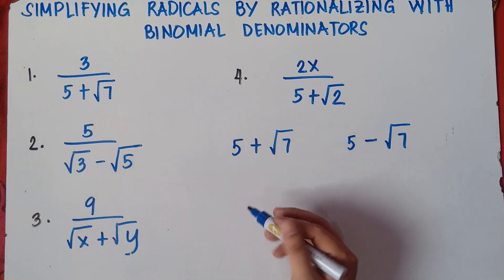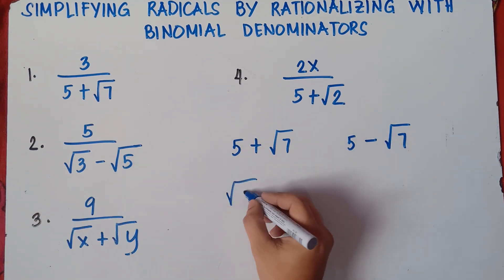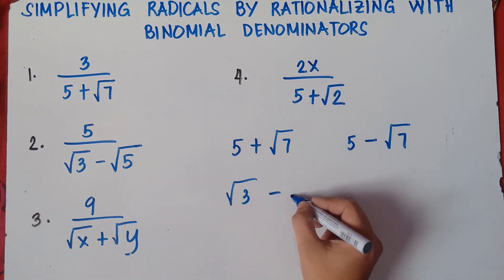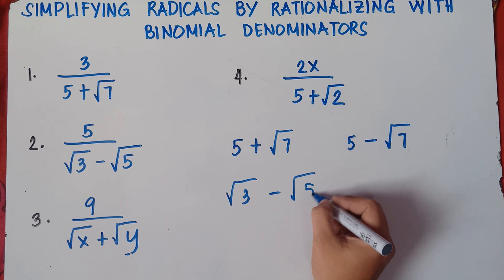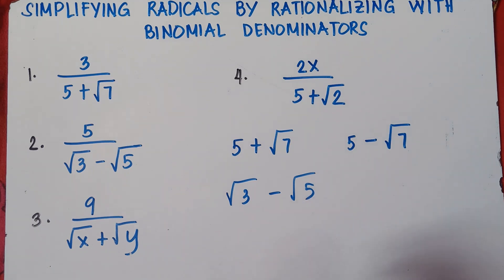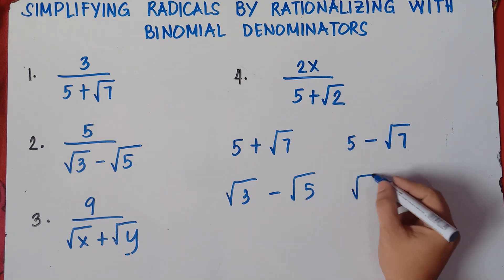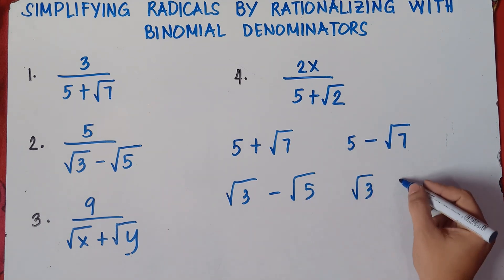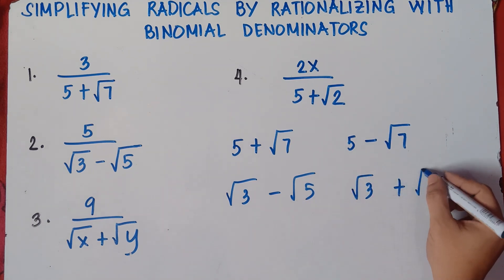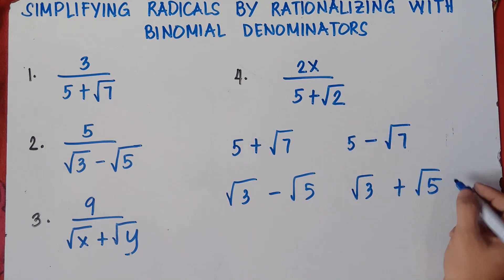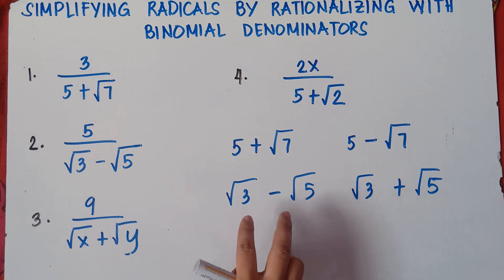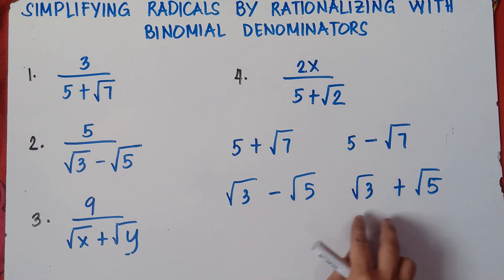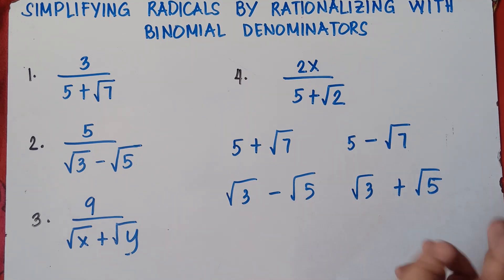Another example: the conjugate of square root of 3 minus square root of 5 would be square root of 3 plus square root of 5. When you multiply a binomial by its conjugate, you will be removing the radicals.